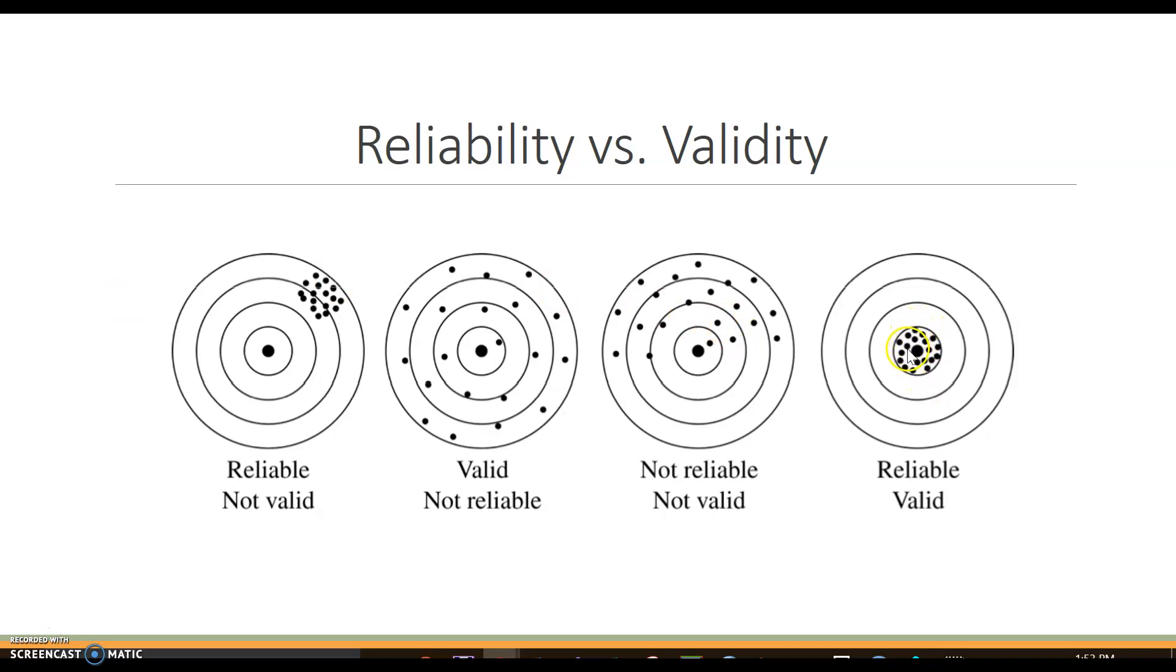So you cannot have validity without reliability. That's why we always start with our Cronbach's Alpha in measurement, because we're talking about internal consistency and making sure each person is answering in a consistent and reliable manner.